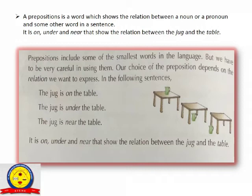So here we will start again with the definition of preposition. A preposition is a word which shows the relation between a noun or a pronoun and some other word in a sentence. Words like 'on', 'under', and 'near' show the relation between the jug and the table — these are prepositions.